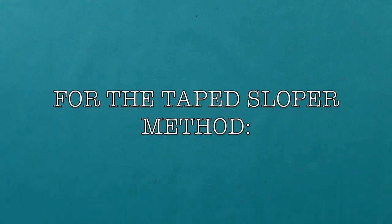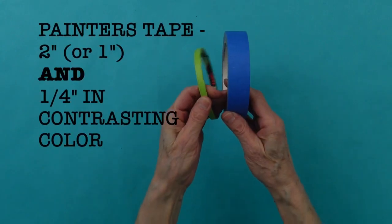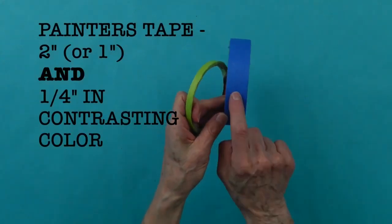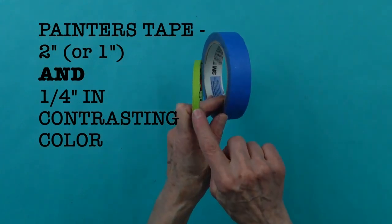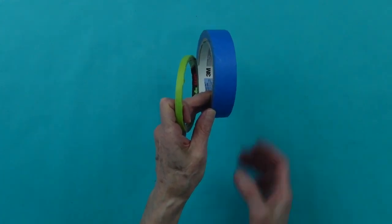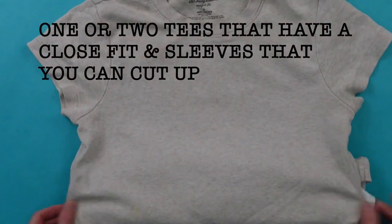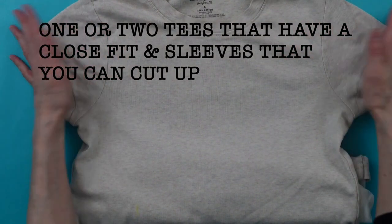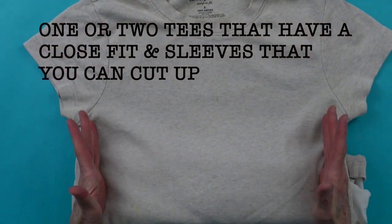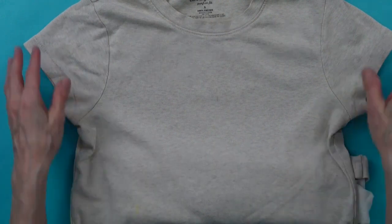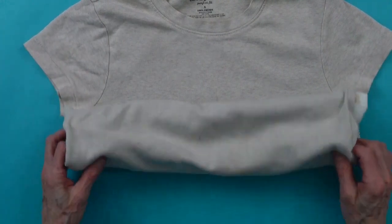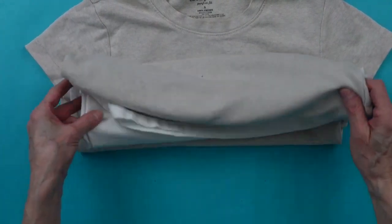If you're going to do the taped sloper method, you need painter's tape. I usually get two inch. One inch will do. And you need a contrasting color in one quarter inch. You need an old t-shirt you can cut up, preferably one with short sleeves and one that is not terribly tight, but snug to the body. If it's not long enough to cover the widest part of your body, take another t-shirt, cut it and attach it.